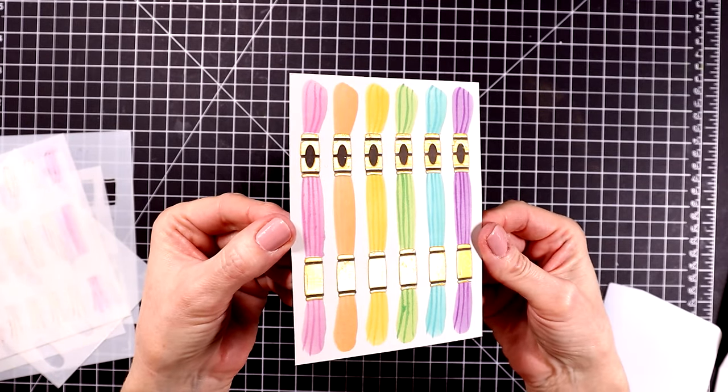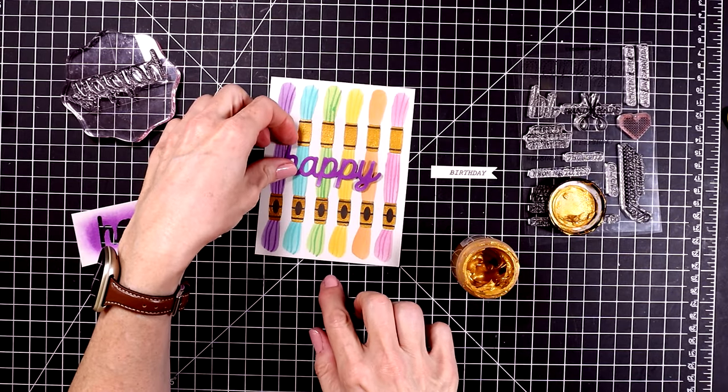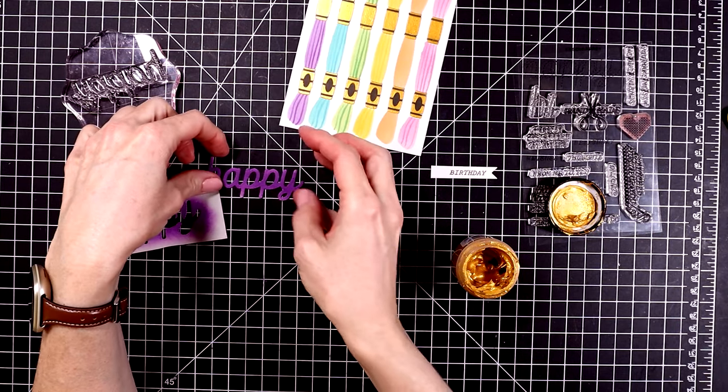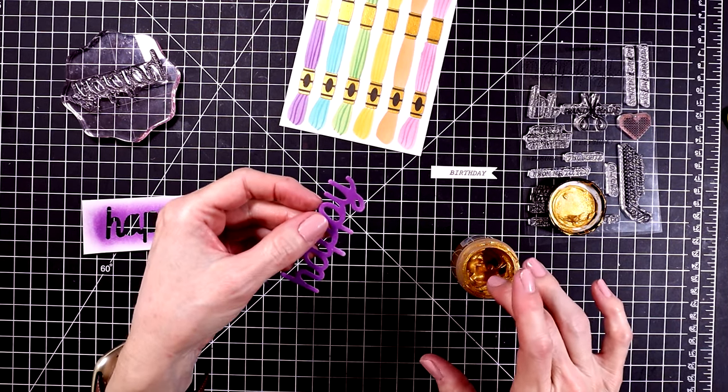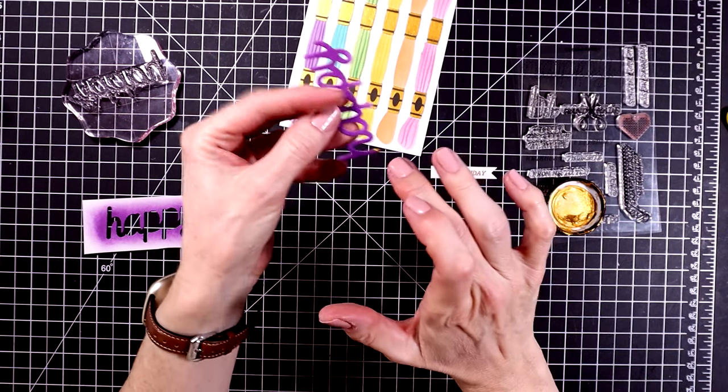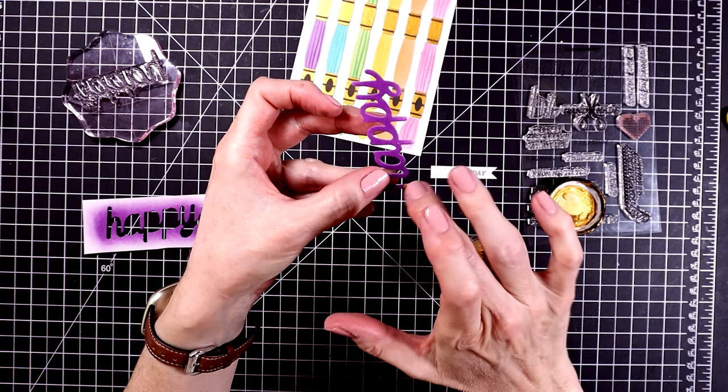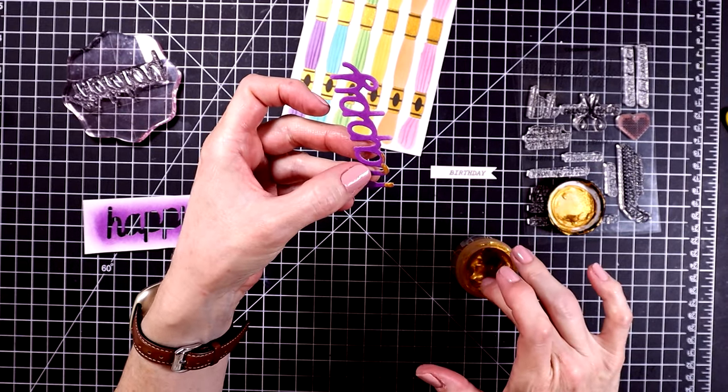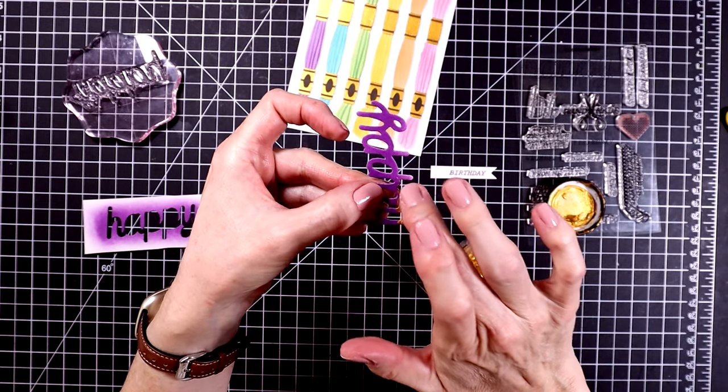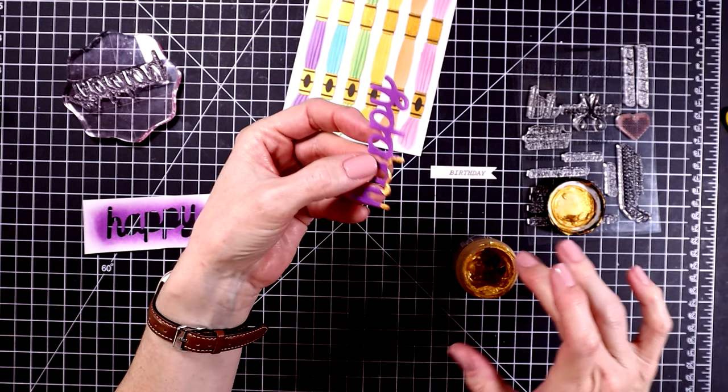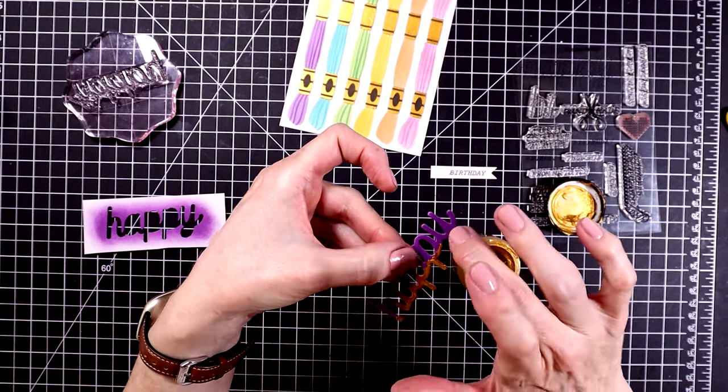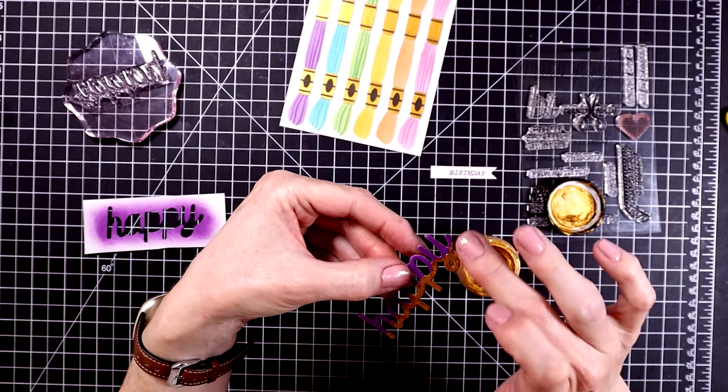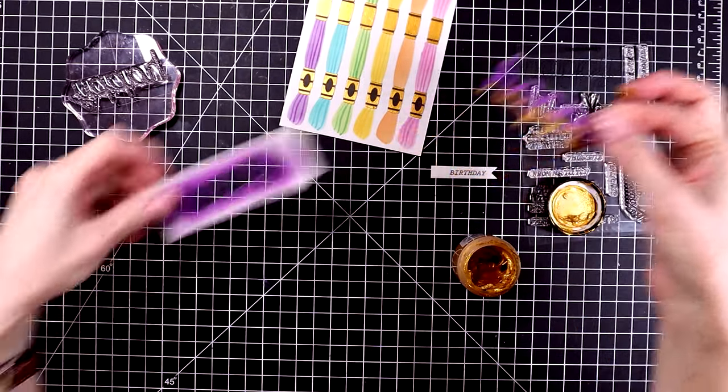And then once it's dry I can start putting together my card. Now here's an example of do as I say and not as I do. Because I put this panel down on the card base upside down. Or at least it looks upside down to me. To me the wrapper with the brown oval in the center should be the top. Of course you can do it any way you'd like. But to me this looks upside down. But that's all right. It still works out.